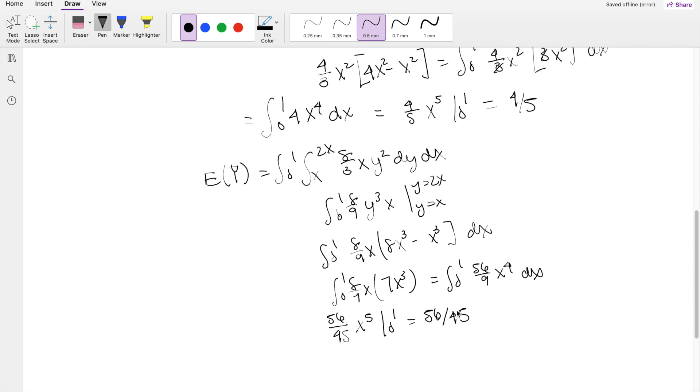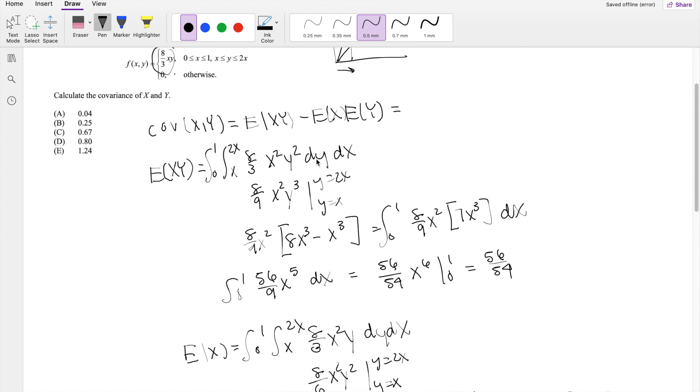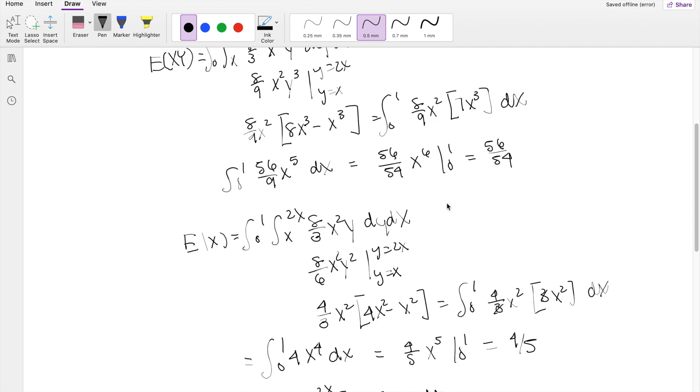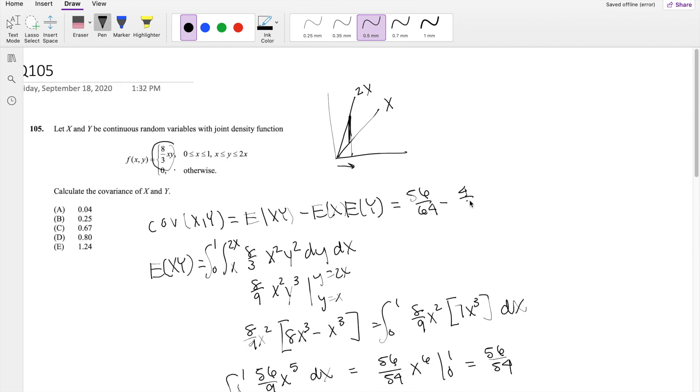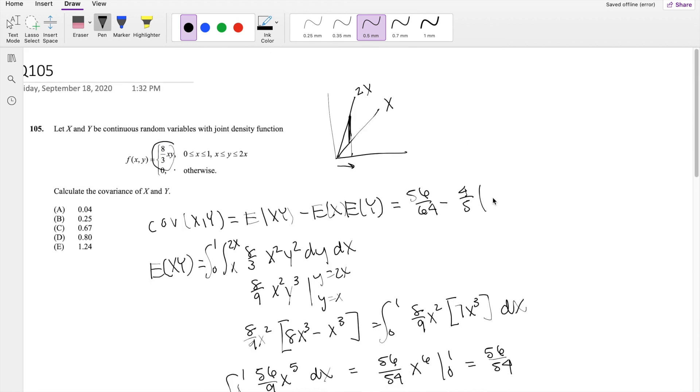Alright, so we have all the ingredients we need. So plugging it back into our formula here, expected value of xy is 56 over 54, minus expected value of x is 4 over 5, times the expected value of y is 56 over 45. Plugging that into the calculator, you get 0.24888, which is approximately equal to 0.25, our answer B.